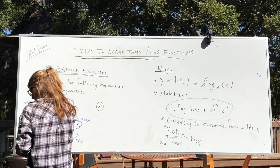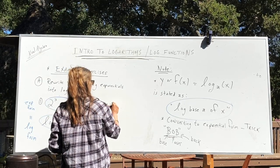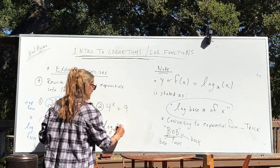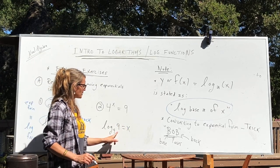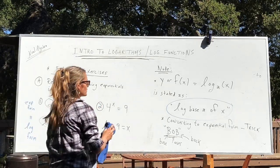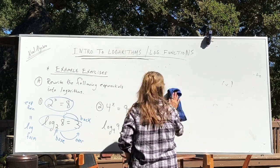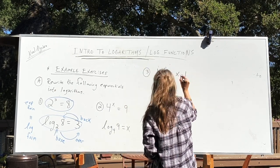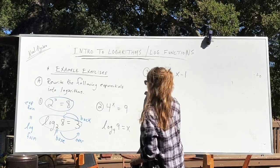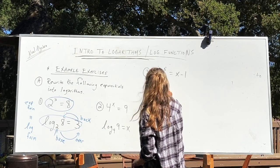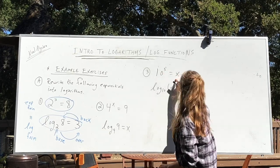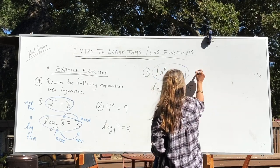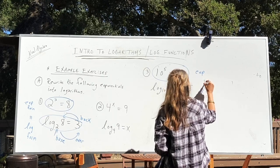Number two: if we had 4 to the x equals 9, we do the same thing — log base 4 of 9 equals x. Base, over, back. And one more: if we had 10 to the 5 equals x minus 1, we say log base 10 of (x minus 1) equals 5 — the whole expression on the other side equals the entire exponent. Here again we have our exponential form and our log form as equivalents.